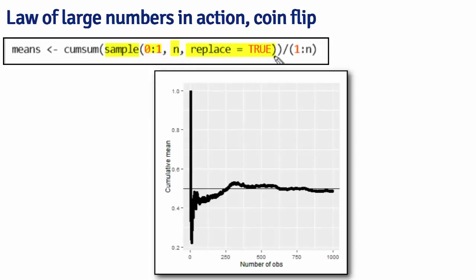And replace equals true just means that I want to sample with replacement. So this command is exactly flipping a coin 1,000 times where 0 is a tail and 1 is a head. I'm taking again the cumulative sum and then dividing by 1 to n to get the cumulative means.